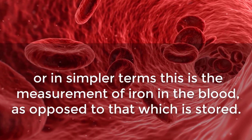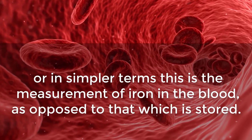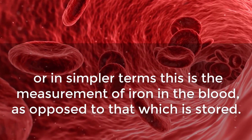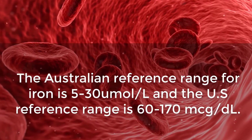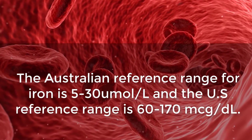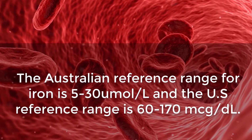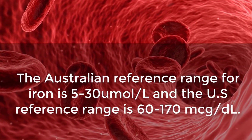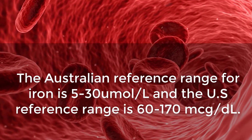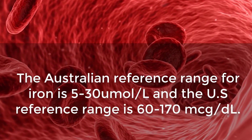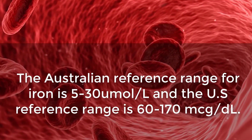Serum iron is the measurement of iron in the blood as opposed to that which is stored. The Australian reference range for iron is 5 to 30 micromoles per liter, and the US reference range is 60 to 170 mcg per deciliter.